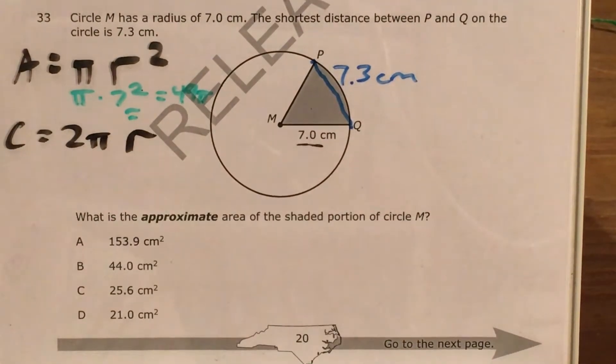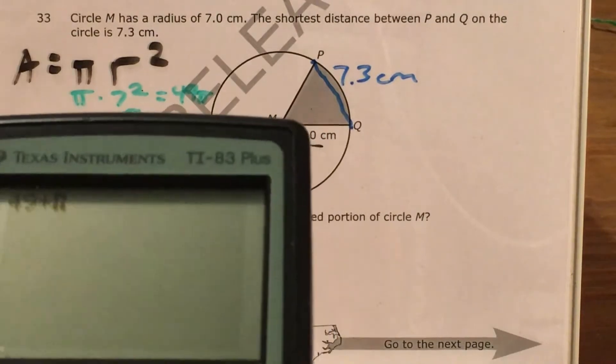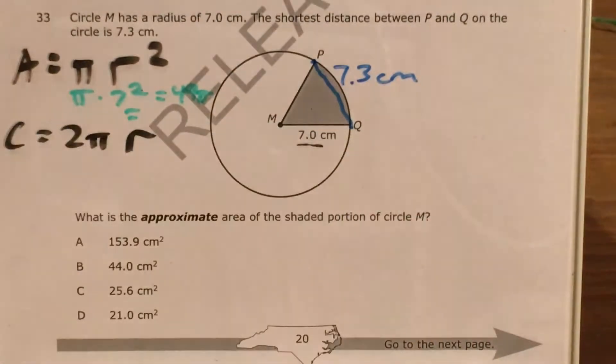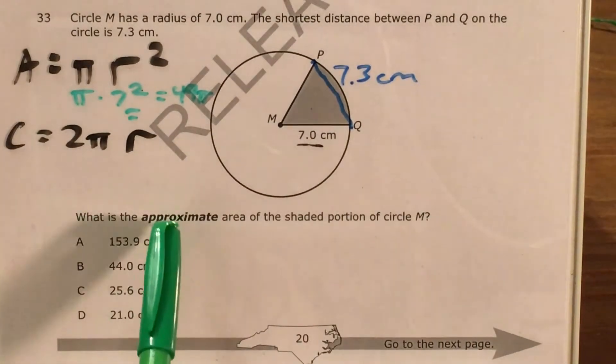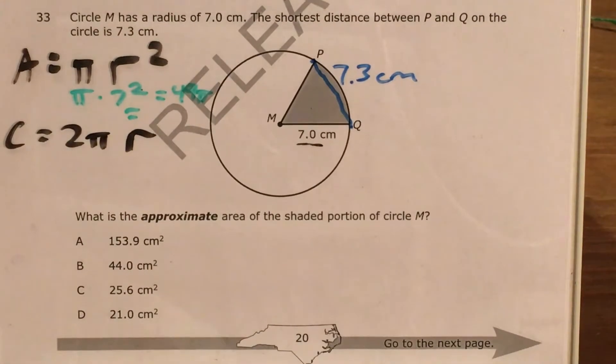And I'll pull out my calculator and say that 49 times pi equals about 154. Since this is asking for the approximate area, I'm comfortable with just saying that that's about 154.